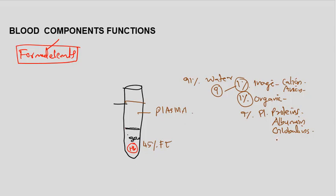Plasma also contains plasma proteins, including fibrinogen and prothrombin, which are important coagulation factors.